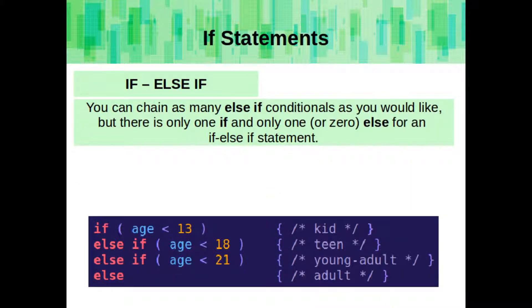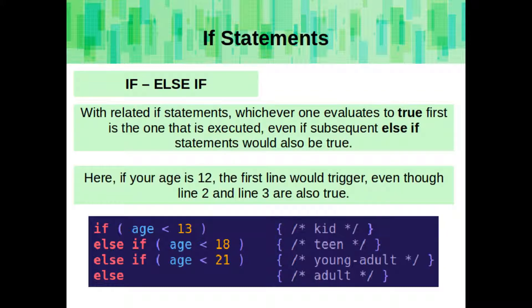You can chain as many else-if conditionals as you would like, but there is only one if, and only one or zero else for an if-else statement. With related if statements, whichever one evaluates to true first is the one that gets executed, even if subsequent else-if statements could also be true. Here, if your age is 12, the first line would trigger, even though lines 2 and 3 are also true.